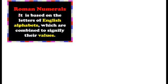Now children, we have to follow some rules for writing numbers — for combining the alphabets to form Roman numerals. The first rule says: if a symbol is repeated, its value is added as many times as it occurs. So whenever a symbol is repeated, we add its value.